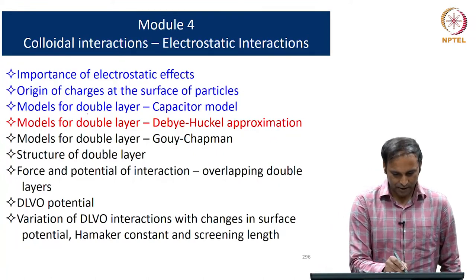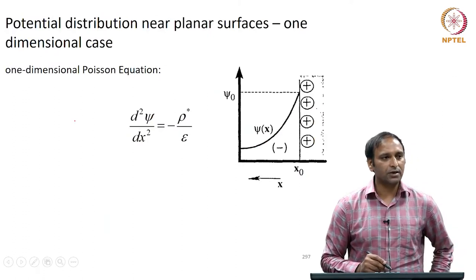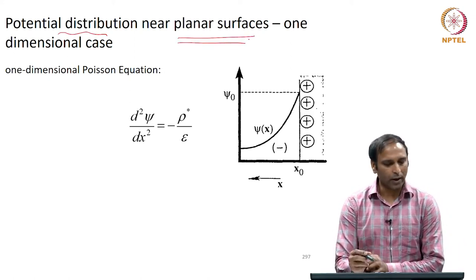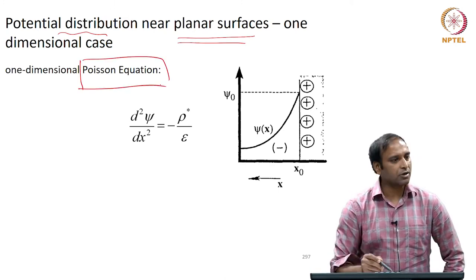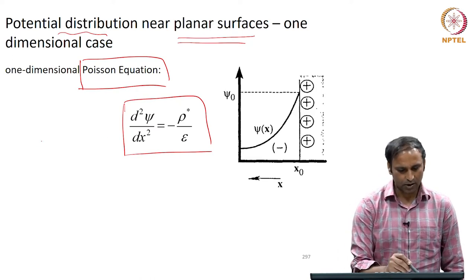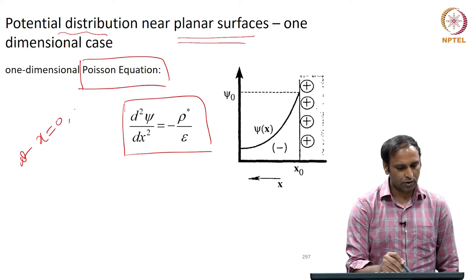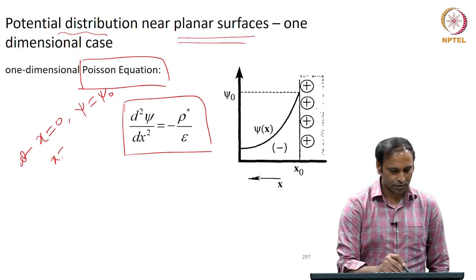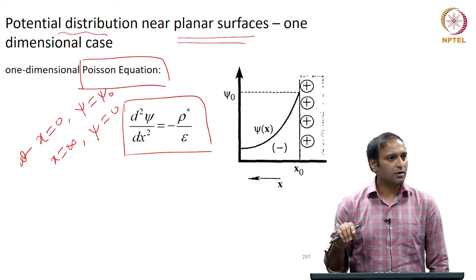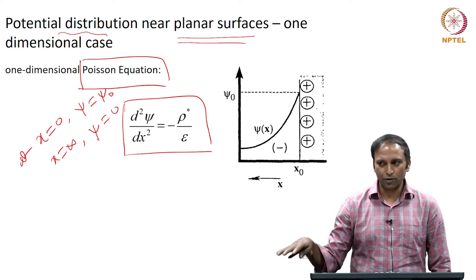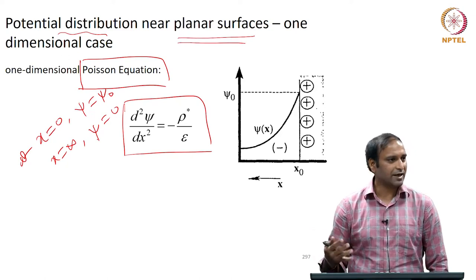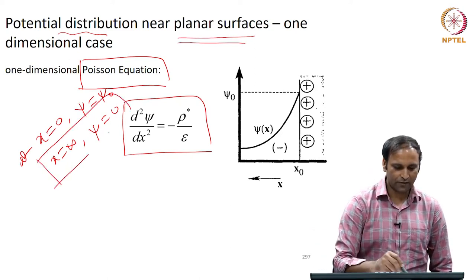We will continue with the models for electrical double layers. What we were trying to do in the previous lecture was looking at potential distribution near a planar surface. We took a 1-dimensional case — solving the 1D Poisson equation — with boundary conditions: at x = 0, the potential is the surface potential itself, and at x = infinity, the potential is 0.